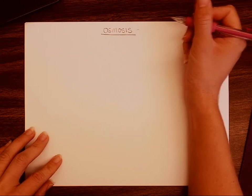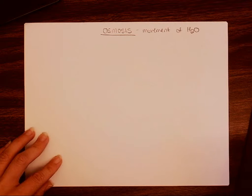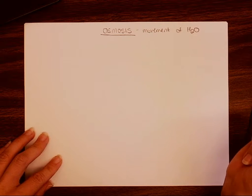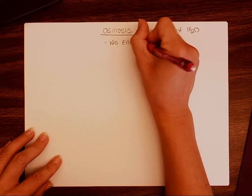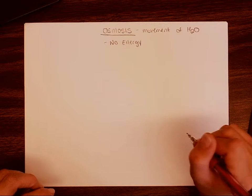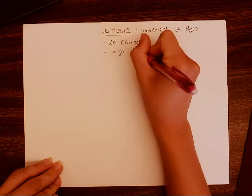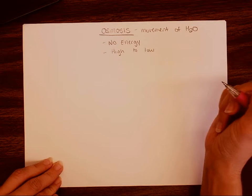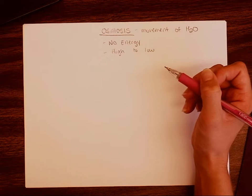In this video we're going to be talking about osmosis. Osmosis is a type of passive transport that specifically looks at the movement of water in and out of a cell membrane. Because it is passive transport, we know that it is not going to use any energy. Water is going to flow from a high concentration to a low concentration, moving across the membrane with no energy.